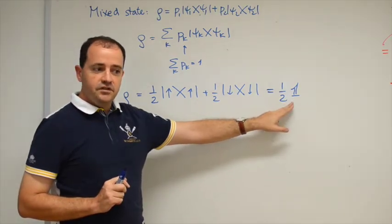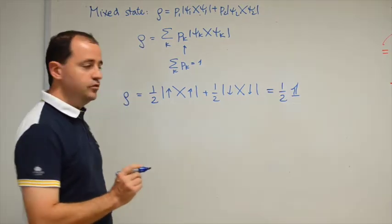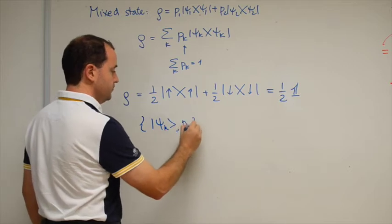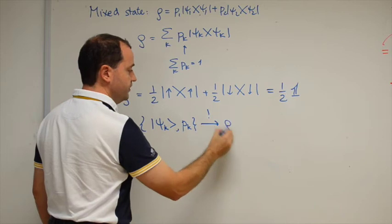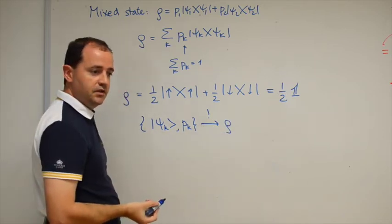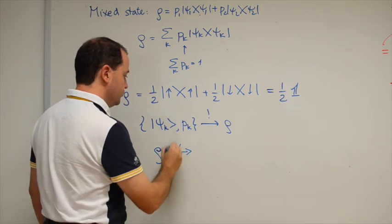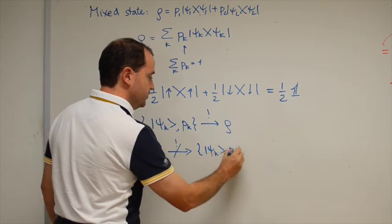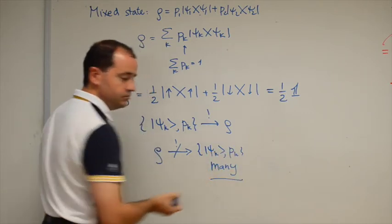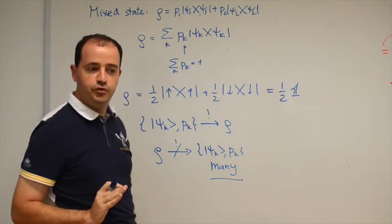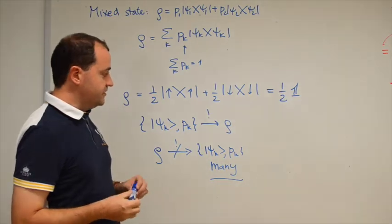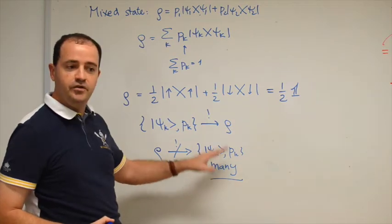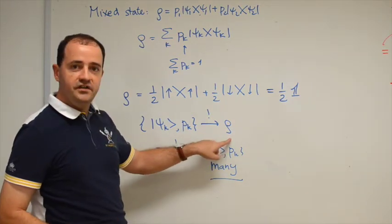This leads to an important remark: if I give you the states and their probabilities, you can obviously construct a unique density matrix rho. But if I give you the density matrix, you cannot reconstruct uniquely the ensemble from which it comes. There can be many ensembles, and in fact there are always many unless the state is pure. So when you do calculations in quantum mechanics, the result cannot depend on which ensemble you use — it must depend only on the density matrix.